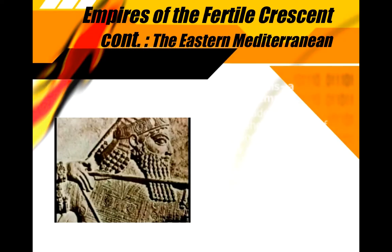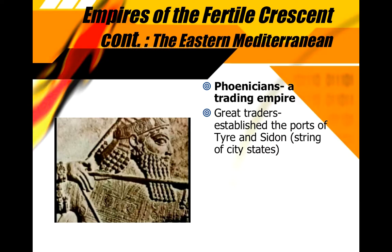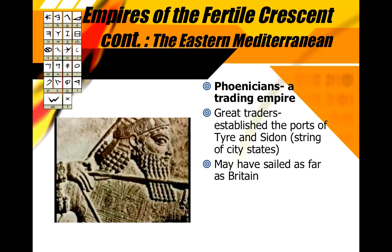The next civilization we haven't discussed much is the Phoenicians. One of the great contributions of the Phoenicians is their creation of a written alphabet, and in fact our alphabet today is based off of the Phoenician alphabet. The reason an alphabet is called an alphabet is because of the first two letters of the Phoenician alphabet, which were Aleph and Bet — Aleph meaning ox and Bet meaning house.